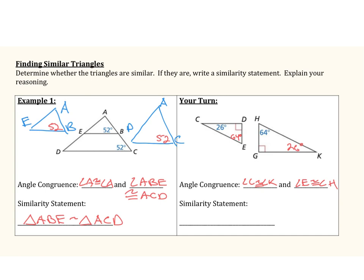Let's go ahead and name our triangles. My triangle on the left I'm going to call CDE. That is similar to triangle KGH, since angle C corresponds to angle K, angle D corresponds to angle G, and angle E corresponds to angle H.